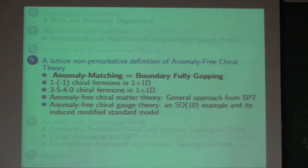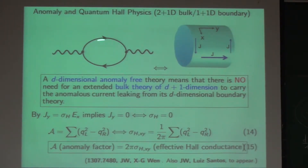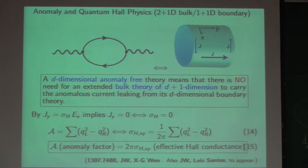Let me use simple language. Anomaly-free means there is no loop contribution — no current going through the bulk. That is just two ways to think about having no anomaly. If there is no bulk current, the edge current is conserved — no anomaly. Anomaly just means something is not conserved, something disappears. If a current put on the edge decays, that is an anomaly. Anomaly-free means this one-loop diagram contributes nothing — it is zero — and there is no Hall conductance.